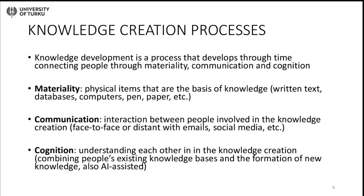How does knowledge develop? We need three aspects: materiality, communication, and cognition. Materiality means physical items — text, computers, pen, paper, and so on. We need interaction between people who develop knowledge, whether face-to-face or at a distance through emails, social media, and so on. Finally, we need cognition — understanding each other in the development of knowledge. Nowadays we also talk about artificial intelligence, and communication and cognition between humans and machines, so it's not only people who understand but also machines.